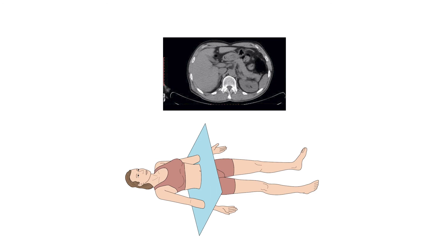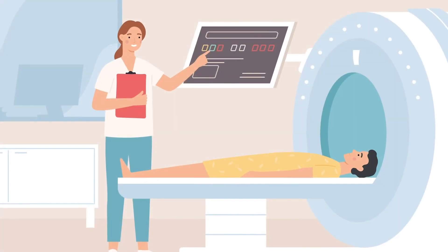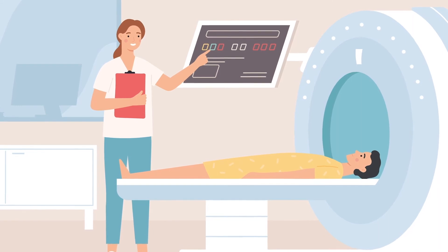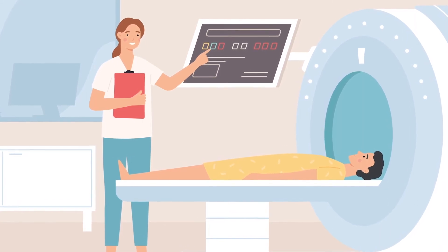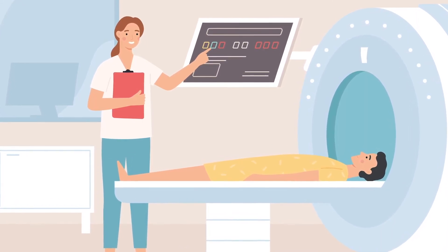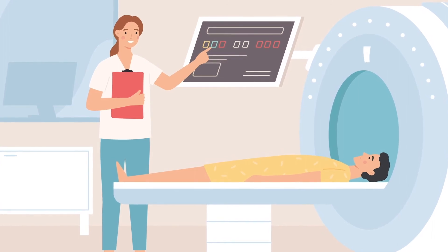Here we have a transverse or axial CT image of the abdomen. Just like with the chest X-ray, the image projected is the one you would envision if you were standing at the foot of the bed and looking at sections of the patient from that perspective.